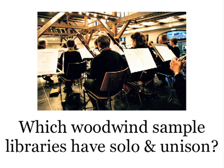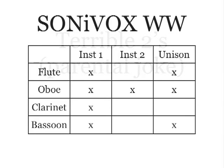So, which woodwind sample libraries have solo and unison? Let's start with the standard course setup of two players each. Going in alphabetical order, here's Sonovox. They have two players for oboes, so you need a second flute, a second clarinet, and a second bassoon for independent part writing and vertical voicings.